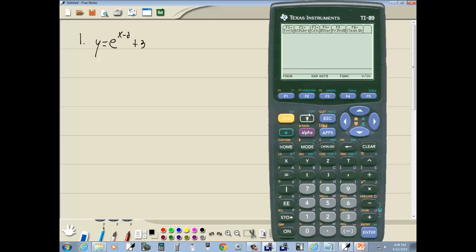I'm going to go to my Y equals so I can do diamond F1. I'm going to up arrow, highlight Y1, press clear if you have anything there. Now I'm going to do E. You see E is above the X and it's in green. So I do diamond X. That puts my E, puts my carat, puts my beginning parenthesis. So then I do X minus 2 and I have to put the closing parenthesis for the exponent, and then plus 3 and then enter.